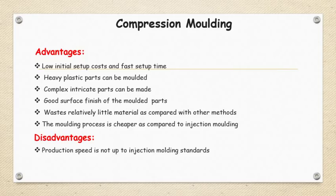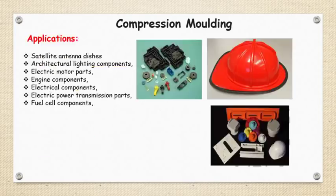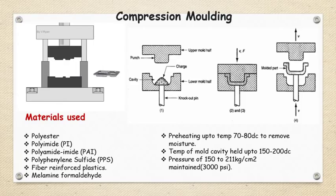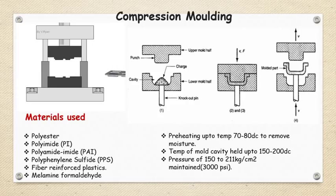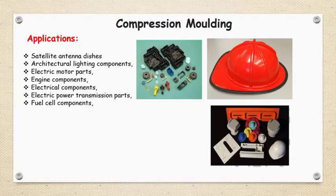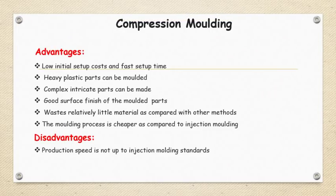An additional disadvantage is that we are heating and cooling the same mold cavity to get the desired shape or remove the component, meaning the cycle time for heating and cooling the same mold cavity will be more. Also, complex geometry shapes cannot be prepared by compression molding.